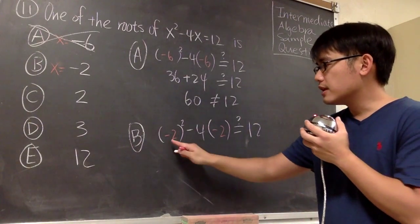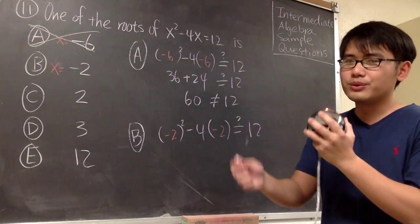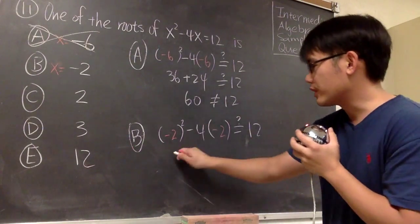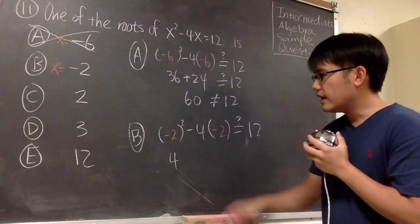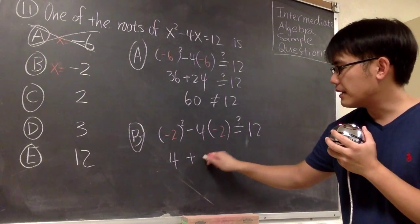So we work this out first. Negative 2 in the parentheses to the second power means we have negative 2 times negative 2. We will get positive 4. Negative 4 times negative 2, that will give us positive 8.